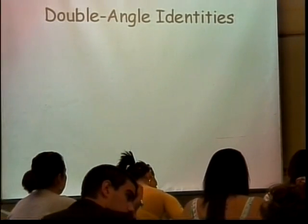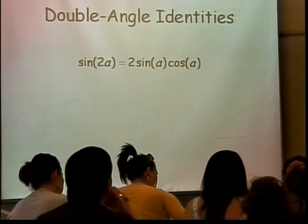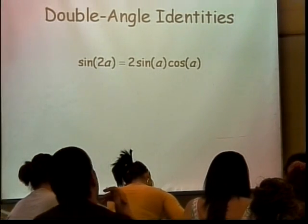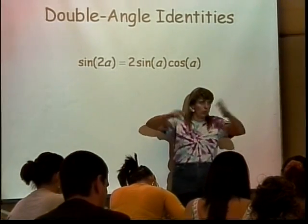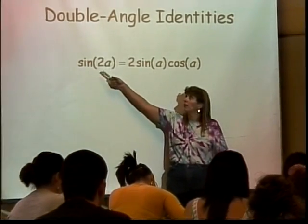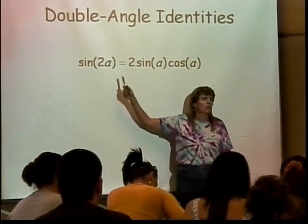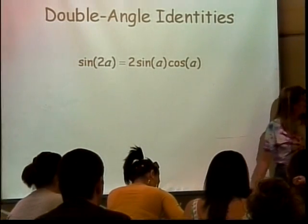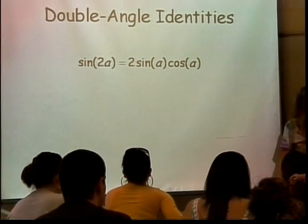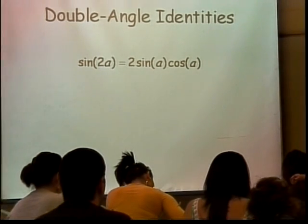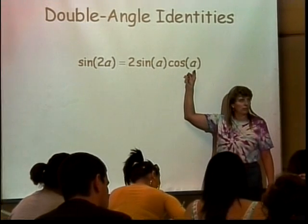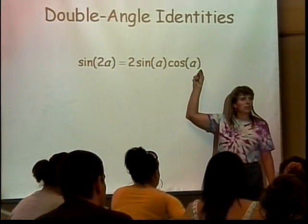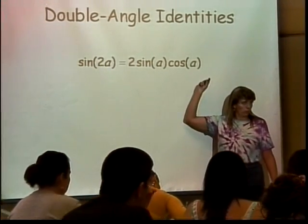Double angle identities. This identity came from having the sine of A plus A. And if you're to use your sine of A plus A formula and plug it in, you have sine of A, cosine of A, plus sine of A, cosine of A. In other words, two sine of A's, cosine of A's. So when the angle's the same, it makes a nice little shortened version of itself.